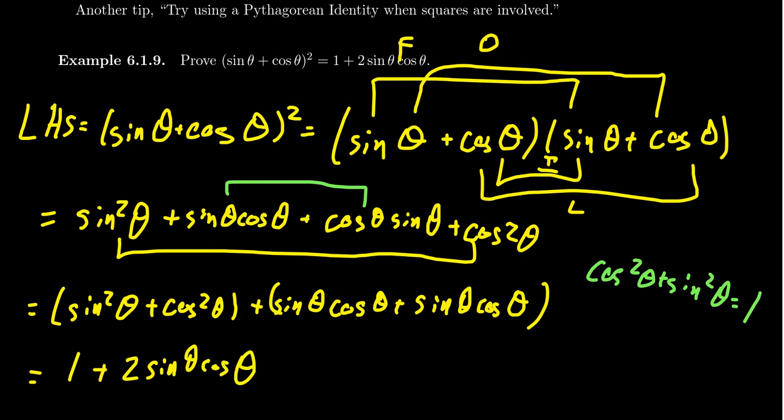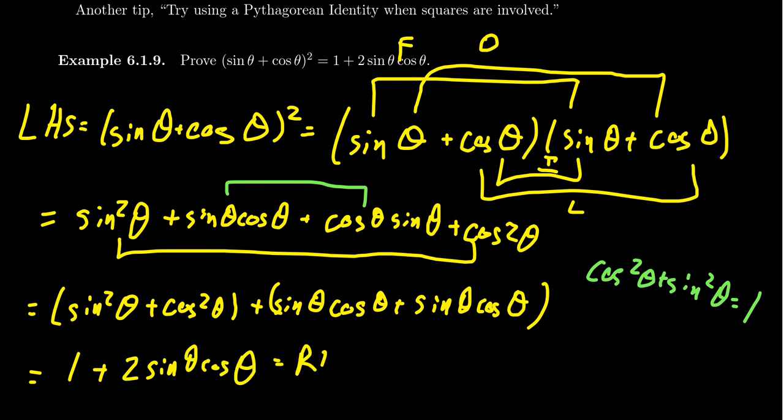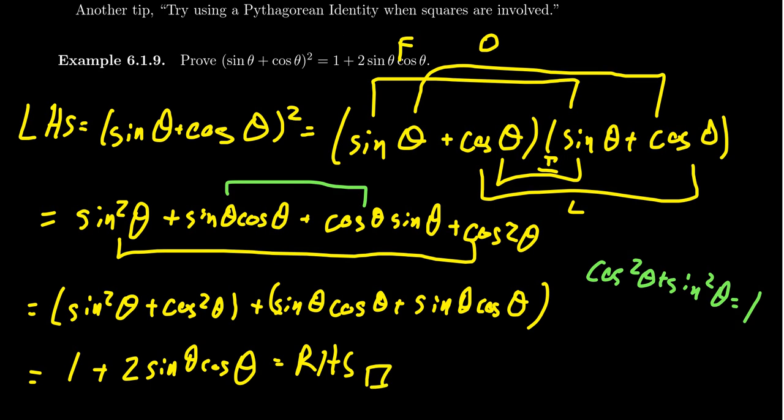Which then we have noticed that this is, in fact, the right-hand side of our identity. And therefore, we've now proven the identity as a consequence of some algebraic maneuvers and the Pythagorean identity. When you have squares or square roots involved, a Pythagorean identity is probably going to be very useful for you. And so that then gives us trigonometric identity tip number three.